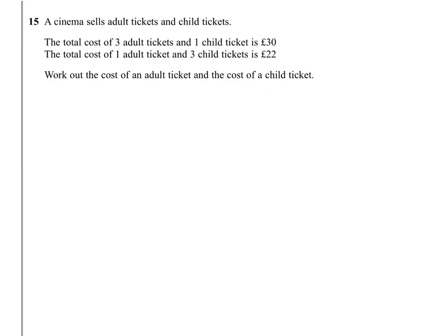So we have to form two simultaneous equations. Three adult tickets, so I'm going to say 3A, plus a child ticket, I'll just put C for child, comes to £30. But one adult ticket and three children's tickets comes to £22. So I've effectively formed my simultaneous equations and I need to solve for A and C.